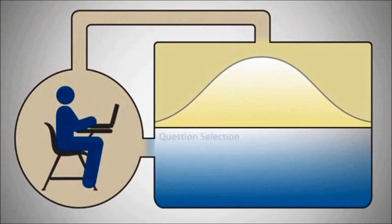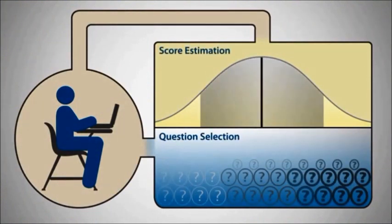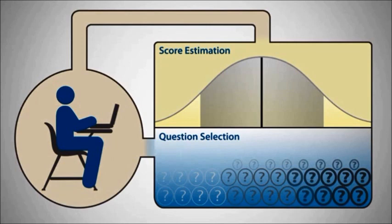There are two key steps: question selection and score estimation. The steps repeat each time a question or a group of questions is presented and answered.